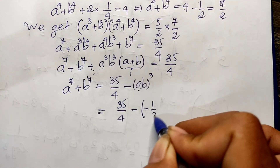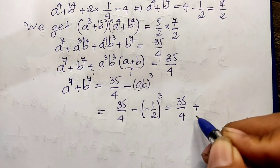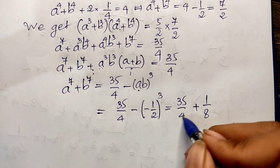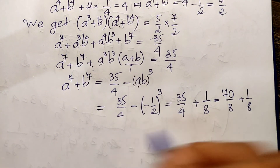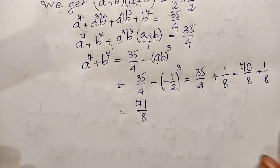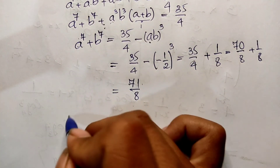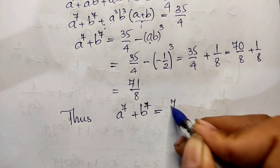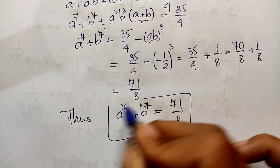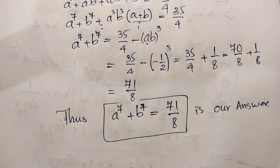Substituting ab equals minus 1 over 2 cubed equals minus 1 over 8, and a plus b equals 1, I get a power 7 plus b power 7 plus minus 1 over 8 equals 35 over 4. Converting 35 over 4 to eighths gives 70 over 8, so a power 7 plus b power 7 equals 70 over 8 plus 1 over 8, which equals 71 divided by 8. So the answer is a power 7 plus b power 7 equals 71 over 8. Thank you for watching — if you like my videos please subscribe to my channel for more exciting videos. Goodbye!